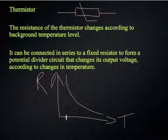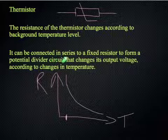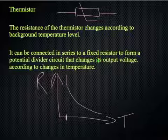In a similar way to the LDR if we connect it in series to a fixed resistor we can form a potential divider circuit that will change its output voltage according to the change in temperature. Which is very useful when we can connect it to an automatic switch like a transistor which we will look at next.